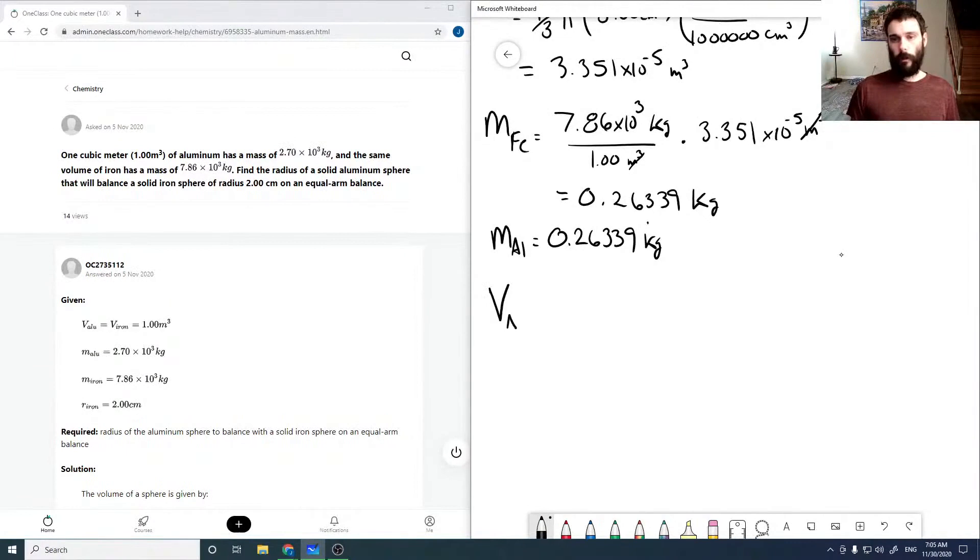So our volume for our aluminum is this mass times 1 over our density factor, 2.70. And you can see that the kilograms cancel, leaving us with a volume unit. 9.7552 times 10 to the minus 5 meters cubed.